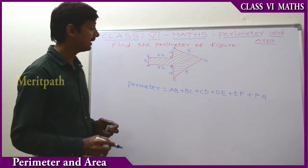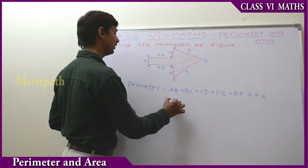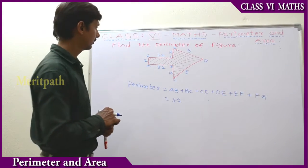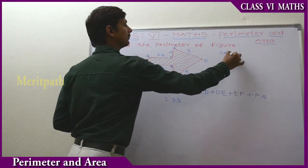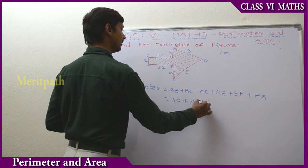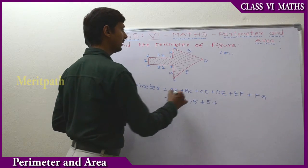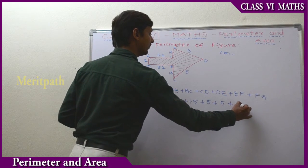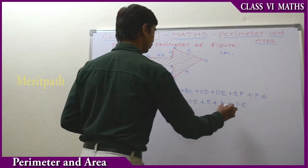So all the sides are added. AB is 3.2 cm, BC is 1.5 cm, CD is 5 cm, DE is 5 cm, EF is 1.5 cm, and FG is 3.2 cm. All measurements are in centimetres.